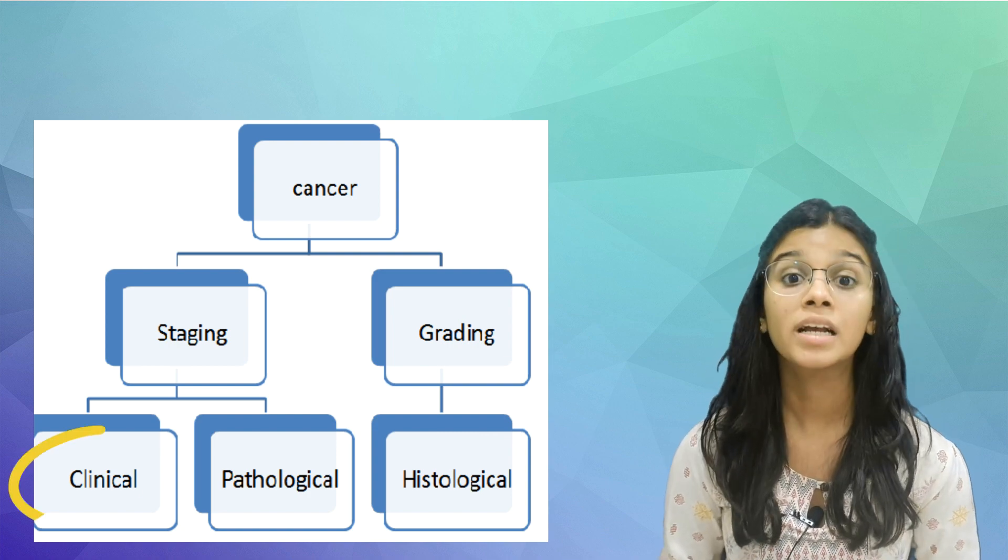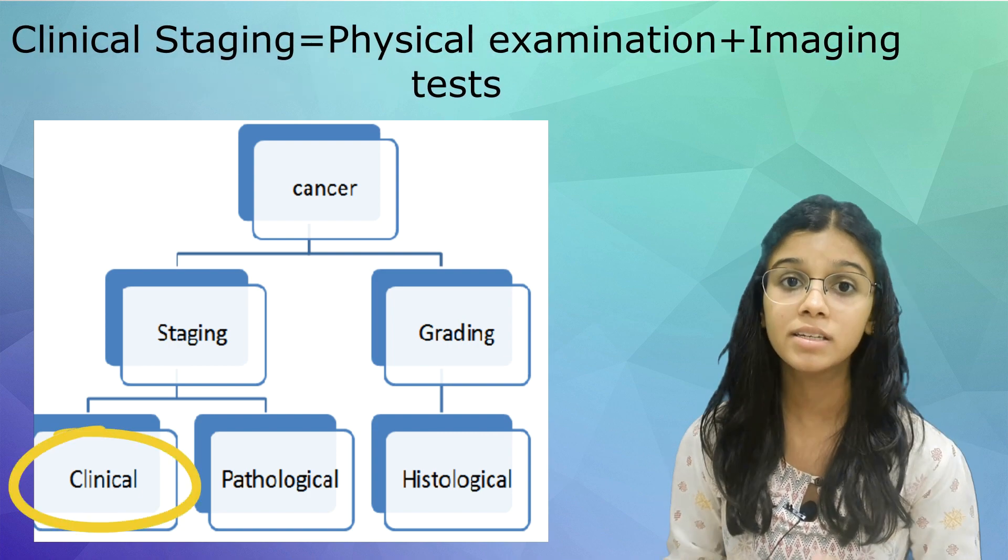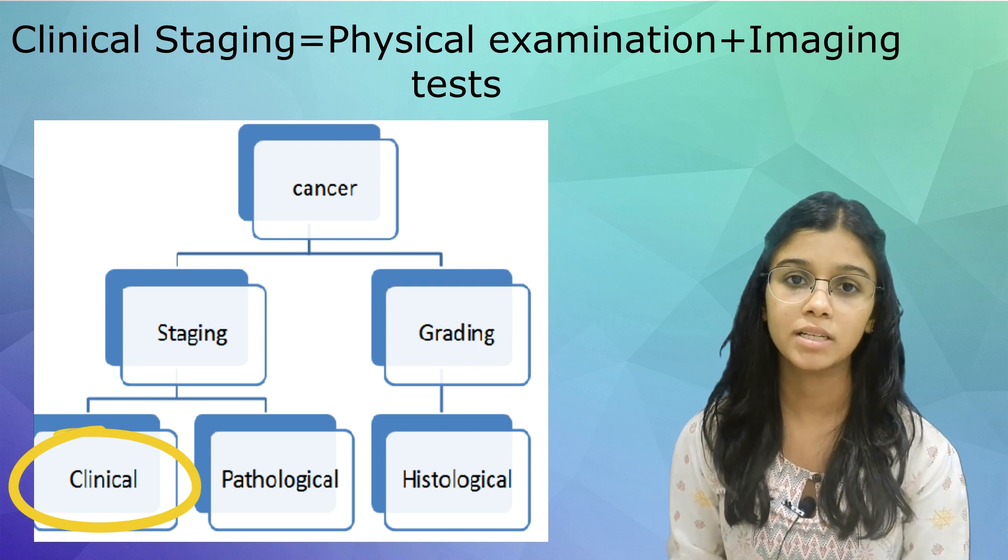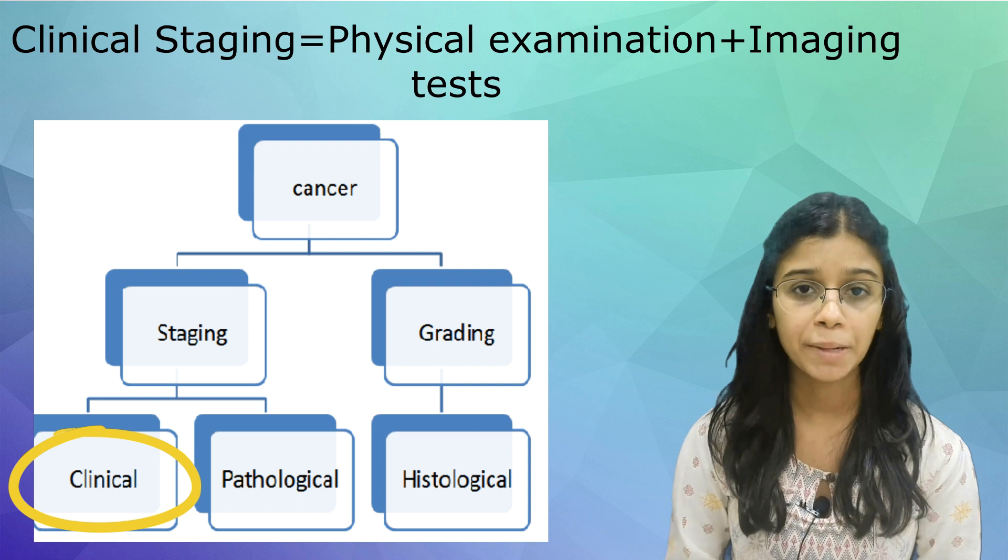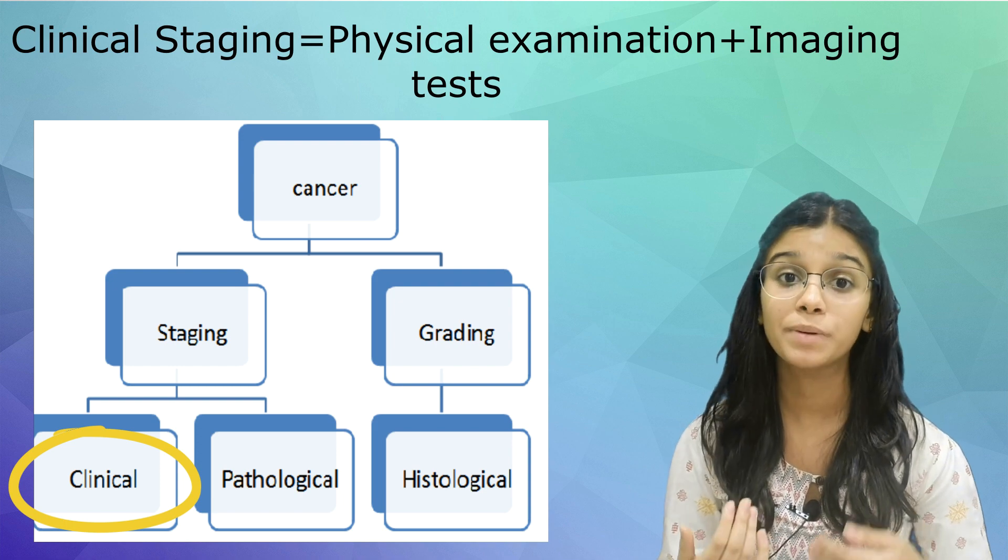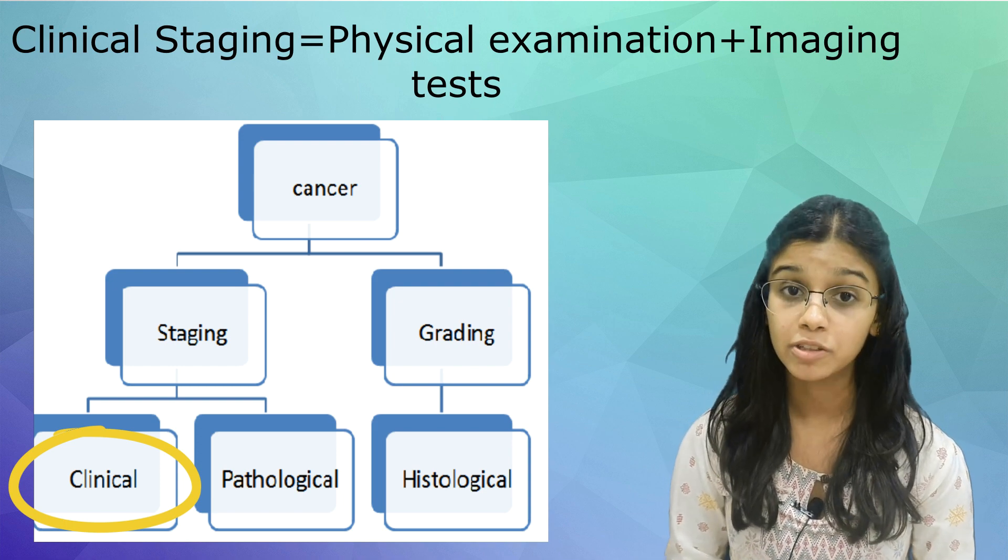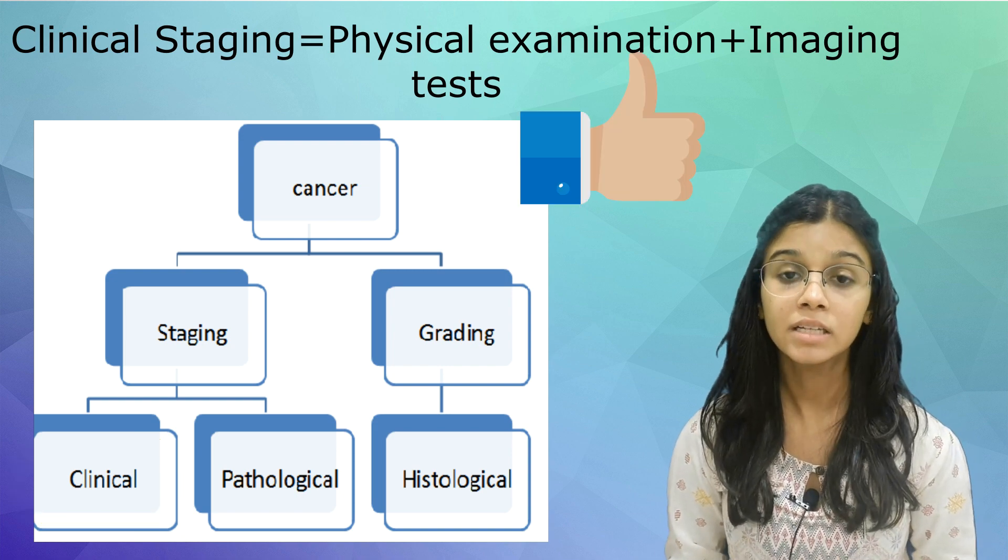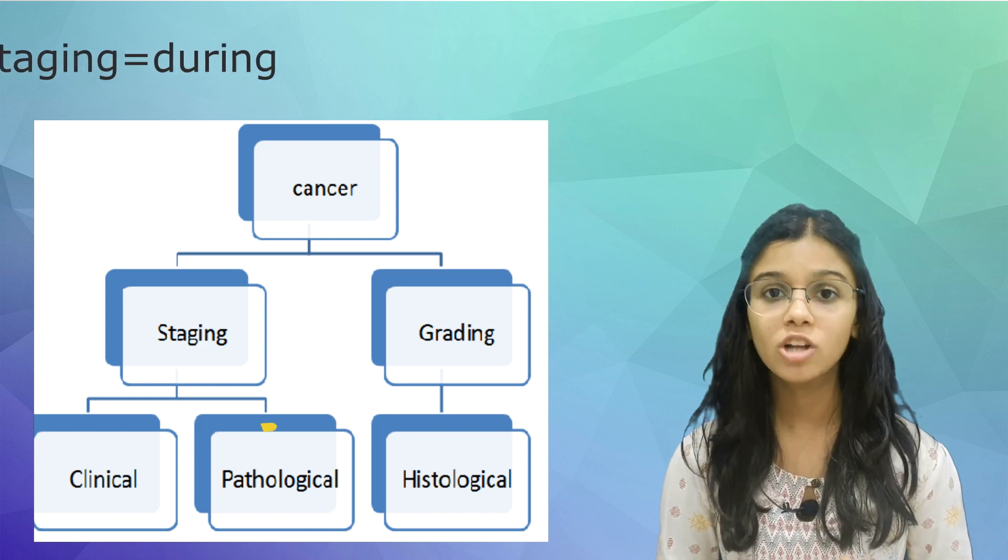So to assess this, we have staging, which could be clinical and pathological. Clinical is where we check the extent of the cancer based on physical examination and imaging tests. We check for the size of the primary tumor, whether it has spread to nearby lymph nodes, and whether it has reached distant areas. The clinical stage is a key part of deciding the best treatment to use.